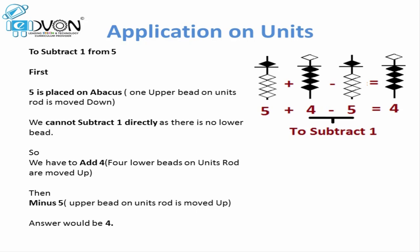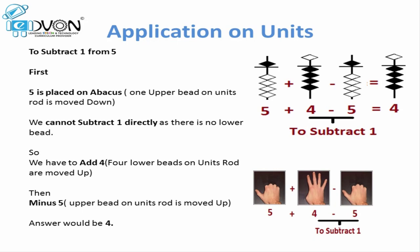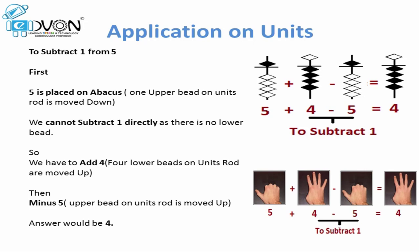Let's take the same example on our fingers. If we want to subtract 1 from 5, first we place 5 on our right hand by opening our thumb. To subtract 1, we don't have any finger open to subtract directly — we only have the thumb open, equal to 5. So we apply the formula: minus 1 equals plus 4 minus 5. We open 4 fingers on the right hand and close the thumb. As a result we get 4 fingers open on the right hand, representing the value 4. So our answer is 4.